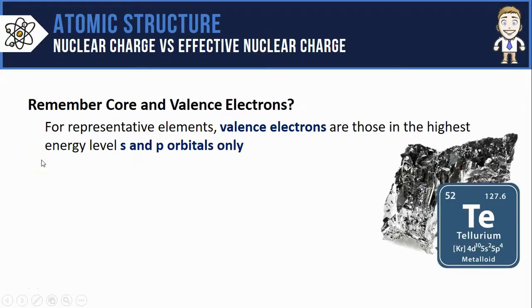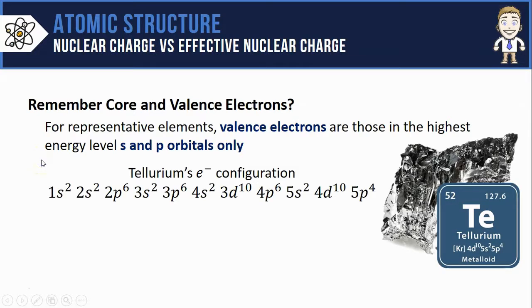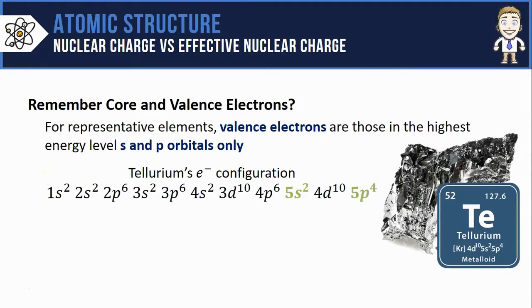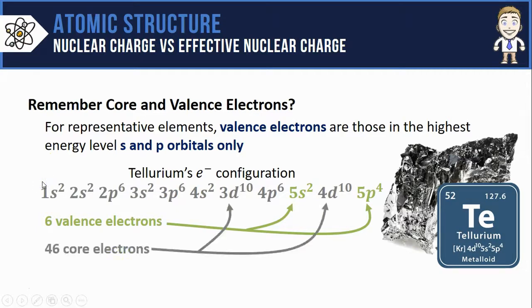Take these tellurium atoms for example which have the configuration shown here. The valence electrons would be those in the 5th energy level s and p orbitals, meaning tellurium has 6 valence electrons. That also means that the entire other set of 46 inner electrons would count as tellurium's core electrons.